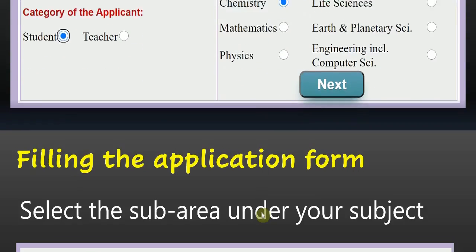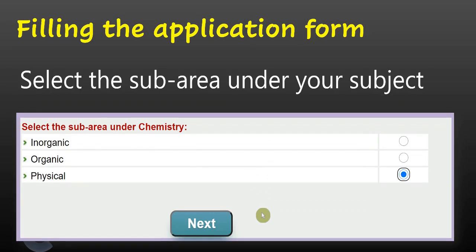Once you select the area of interest, you have to click next. If you click next, then it will ask you to select the sub-area under your subject. You have to choose one among them. To me, it's physical chemistry. So, I selected physical. Then click next.